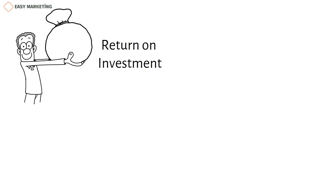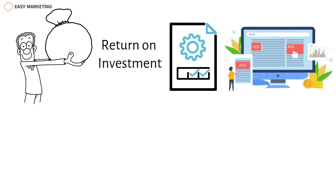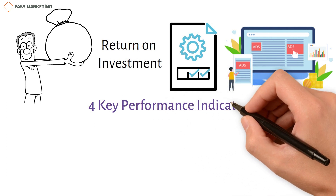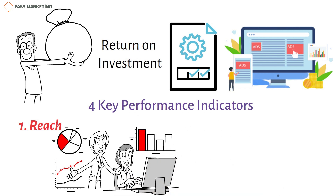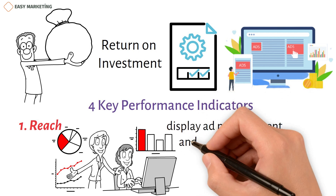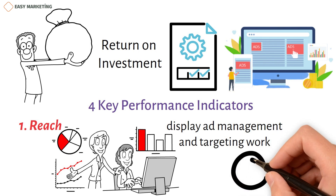It is important to evaluate how well your plan for managing display advertising works. Here are four key performance indicators (KPIs) that can help you measure the results. First, reach — to figure out how many people saw your ad, you need to keep track of how many people saw it. This is shown by the unique number of times your display ad has been seen. If your ads aren't reaching the people you want, you should change your targeting criteria.